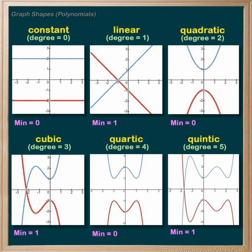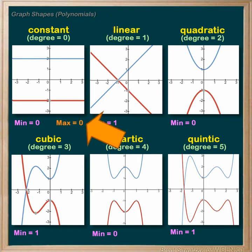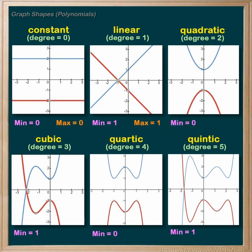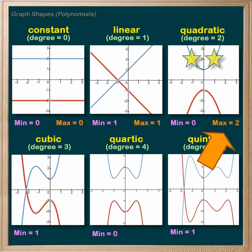Trend number three: we can determine the maximum number of solutions for a polynomial relationship based on its degree. A non-zero constant, degree zero, has no solution — both maximum and minimum are zero. A degree of one, linear, simply goes from bottom to top or vice versa, so it has both a minimum and maximum of one solution — a degree of one always has exactly one solution. A degree of two, quadratic, has one bump or change in direction, so it could cross the x-axis up to two times, giving a maximum of two solutions.